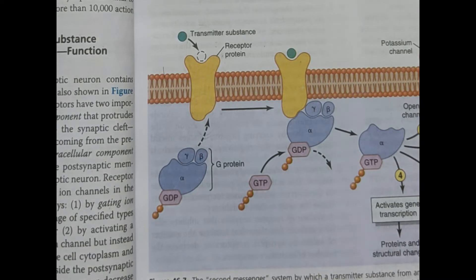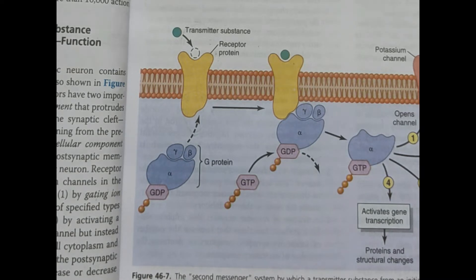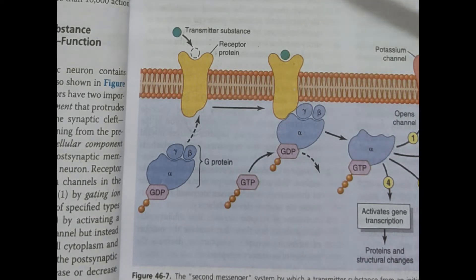Cation channels are named for transferring cations, but in reality they are negatively charged themselves. This makes sense because positively charged ions would be repelled by a positively charged channel. So in order for cations to pass, the channel itself must be negatively charged — that is why cation channels are negatively charged, enabling the passage of cations.